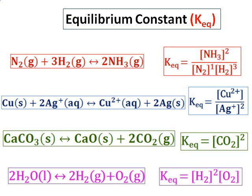All these examples are in accordance with the rules we just studied. To revise: write product over reactant, raise products and reactants to the power of their stoichiometric coefficients, include only aqueous solutions and gases, and do not include solids and liquids while writing the equilibrium constant.